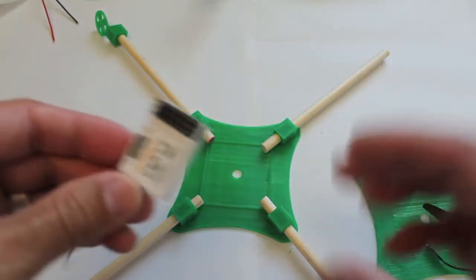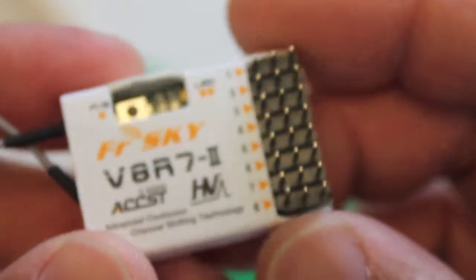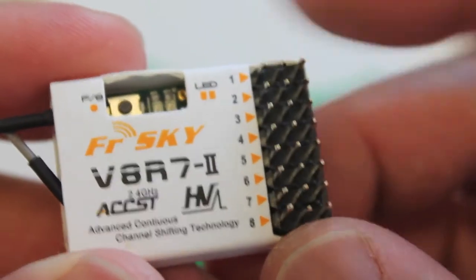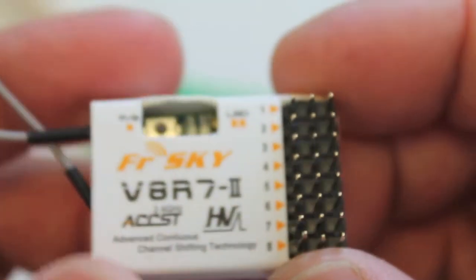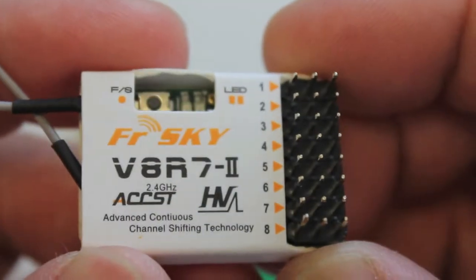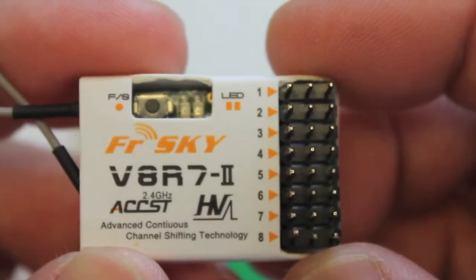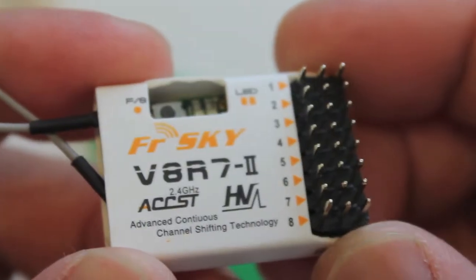And last but not least, I wanted to mention—I failed to point this out in my intro video—but this is the receiver I'm going to be using with the build. Right now I'm only going to be using the four channels, and it's a great little FreeSky receiver and weighs roughly about five to six grams, so that should be a pretty good lightweight receiver to add to the build.